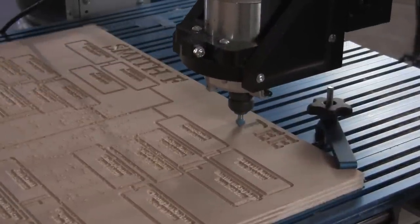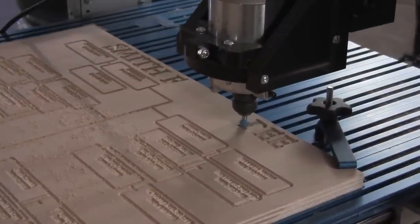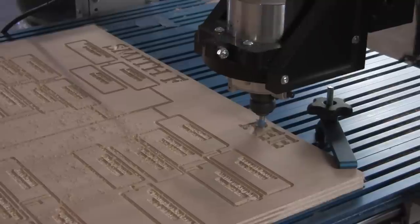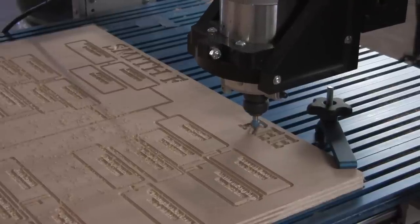Use MDF or some other kind of scrap wood. Test the cuts. Make sure it runs from beginning to end of the program without flaw. Then you're ready to start with your heirloom quality material.